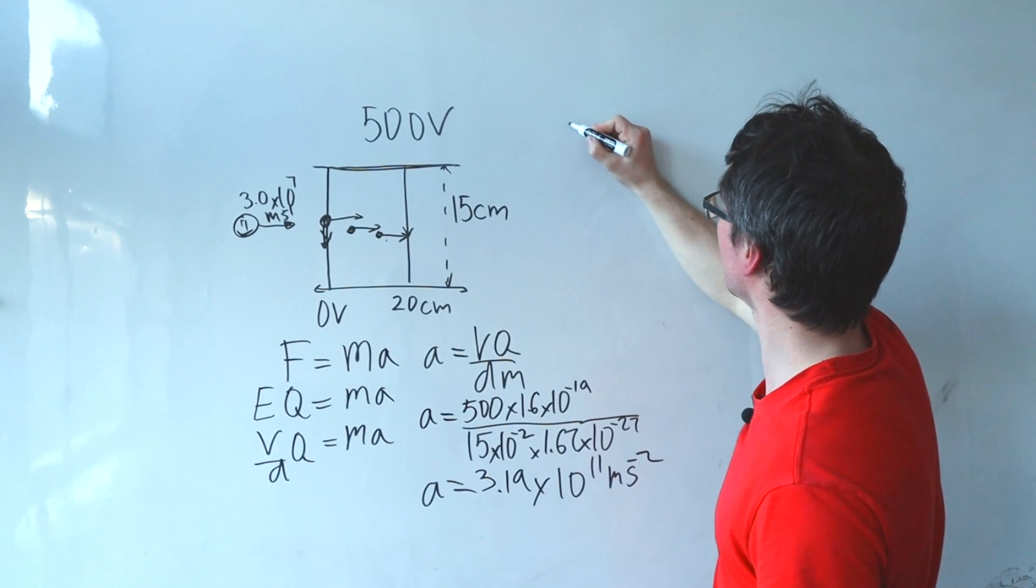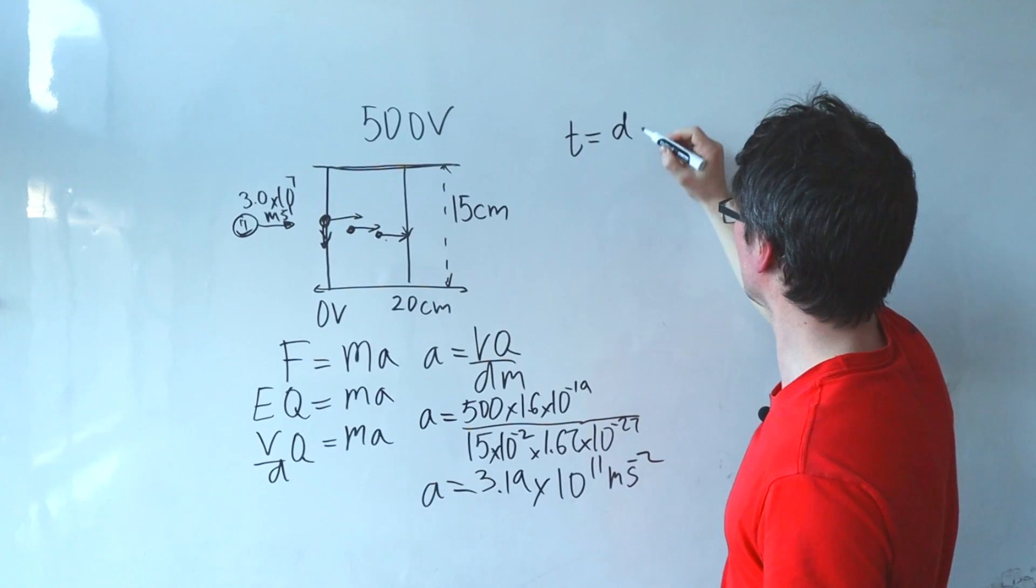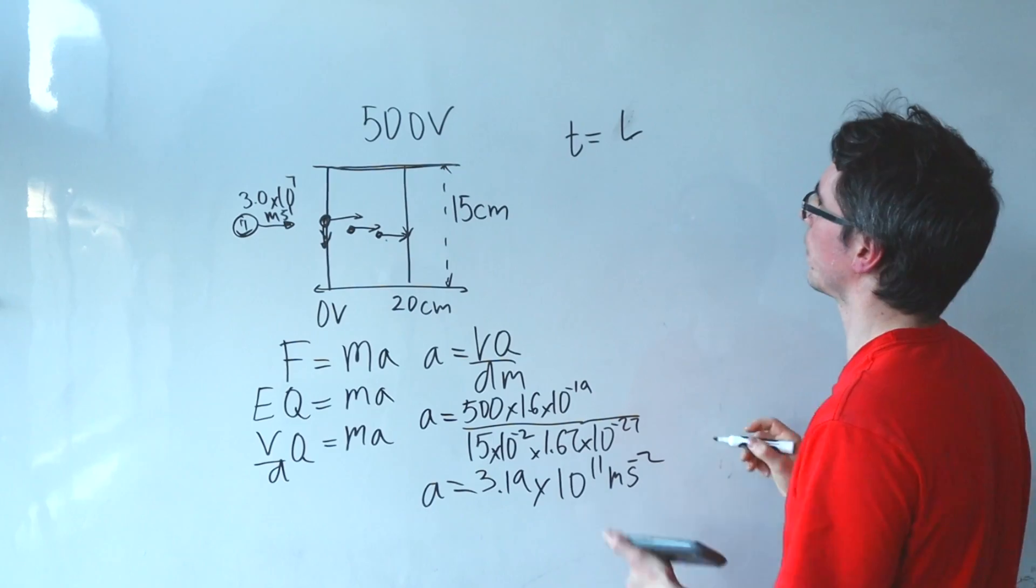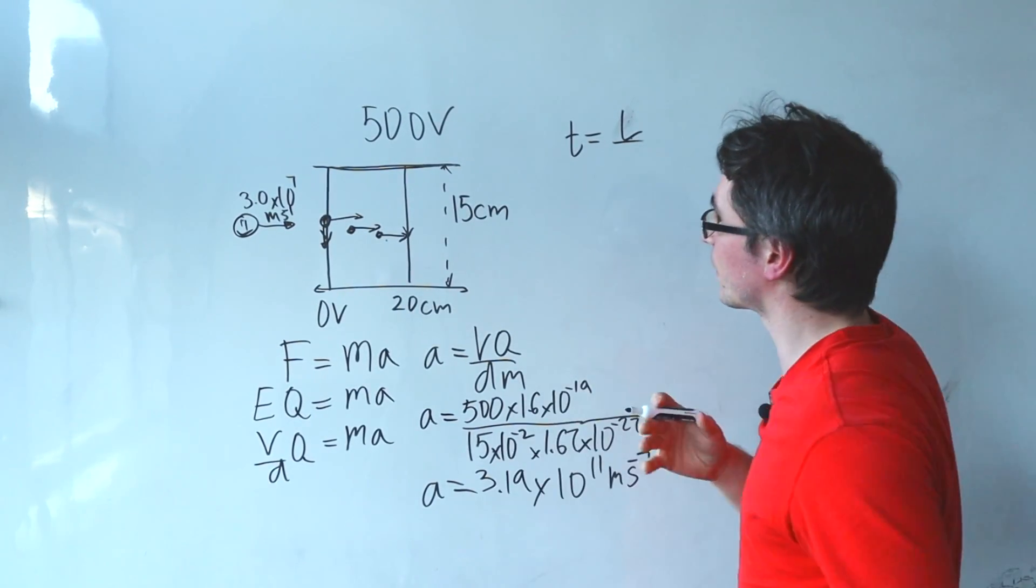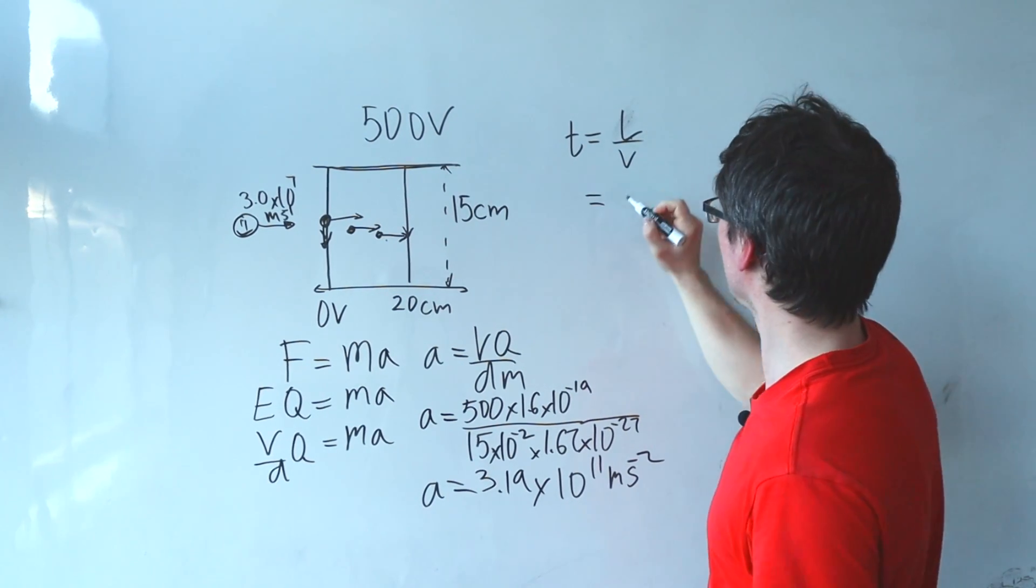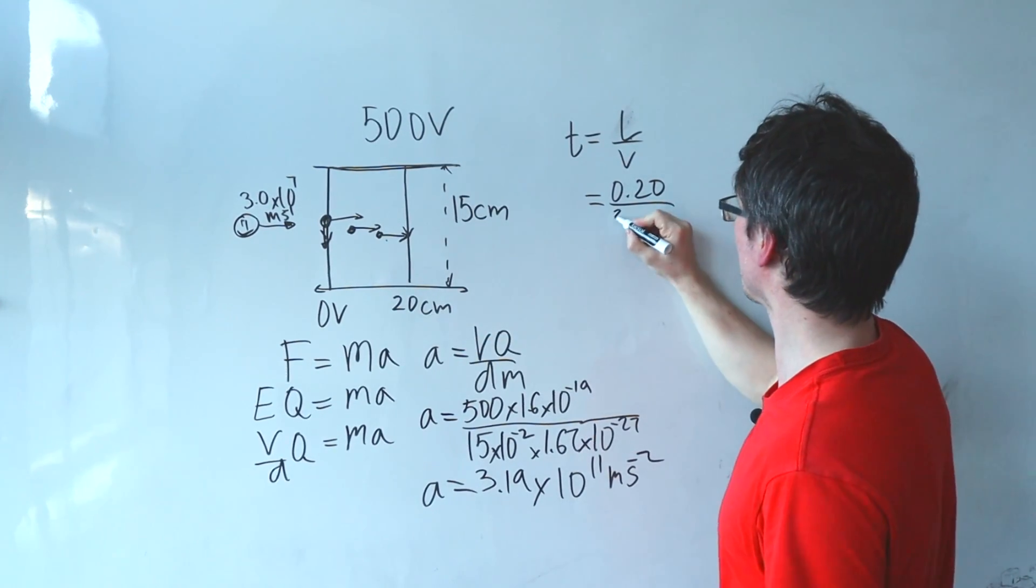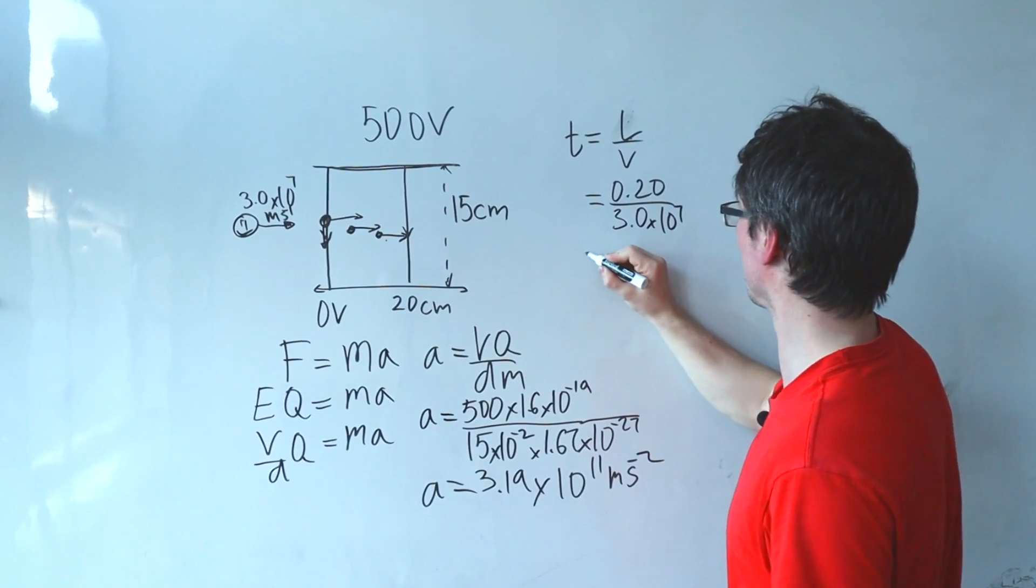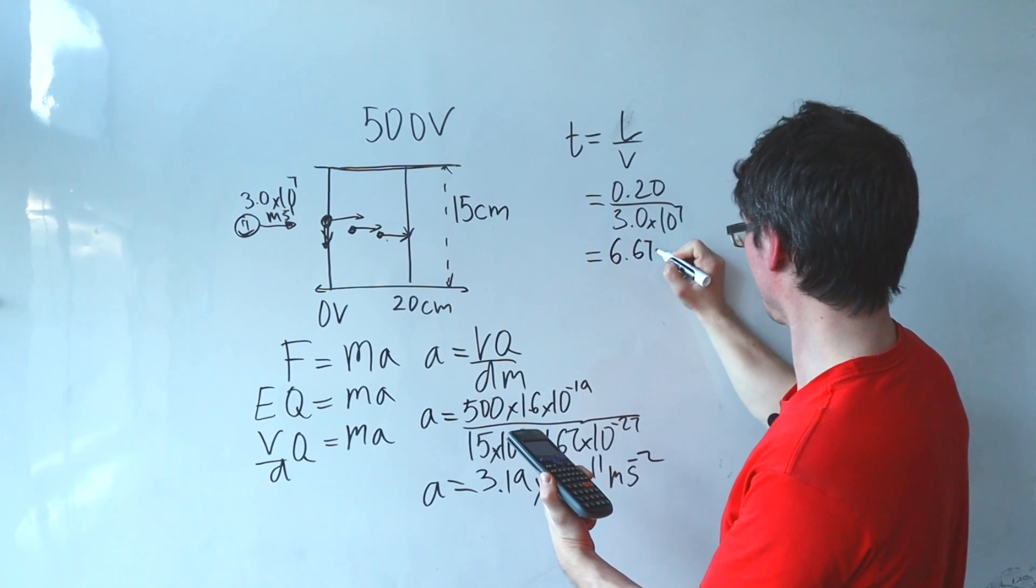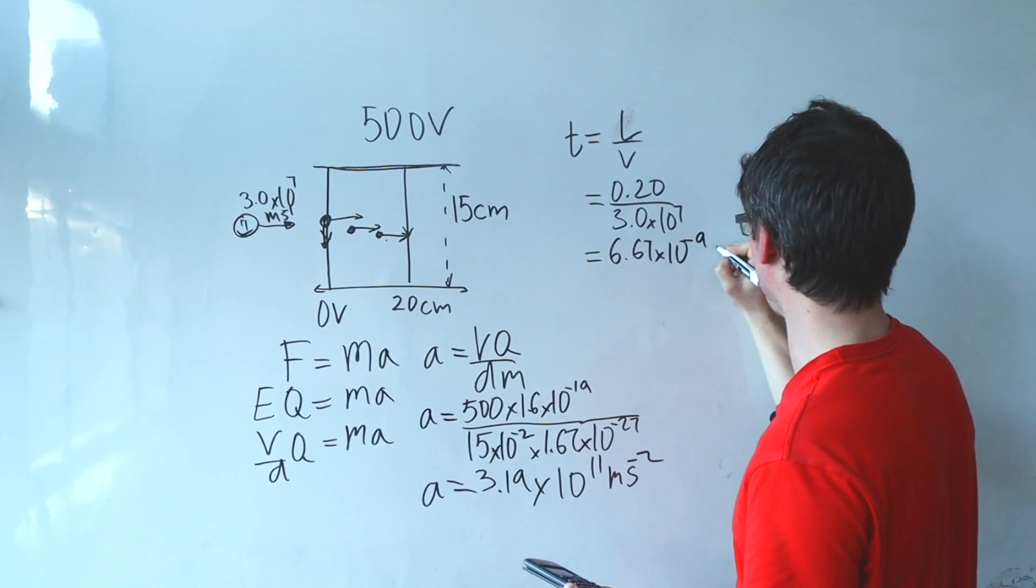To calculate how much time it spends I am just going to use the fact that the time will be equal to the distance, which in this case will be the length of the plate, let's just call it L, divided by its speed which is just 3.0 times 10 to the 7 meters per second. Okay now the length was 0.20 meters, 20 centimeters, divided by the speed which is 3.0 times 10 to the power of 7 and we're going to get around 6.67 multiplied by 10 to the power of minus 9 seconds.